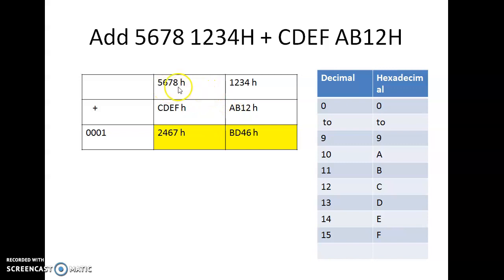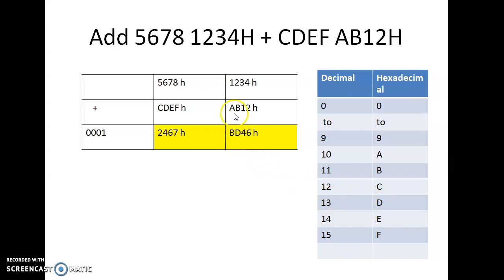We have two hexadecimal numbers: 56781234 and CDF AB12. We have to add these two. So 4 plus 2 is 6, 3 plus 1 is 4. B is 11, 11 plus 2 is 13, and the equivalent of 13 is D. Then A plus 1: A is 10, plus 1 is 11, and the equivalent of 11 is B. Since there is no carry here, we leave this and move on.